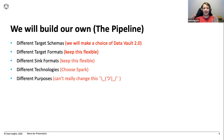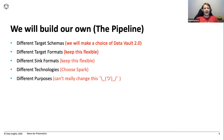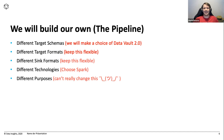Data Vault has only three kinds of tables: hubs, links, and satellites. And that means you only need three pipelines — so that's a win.